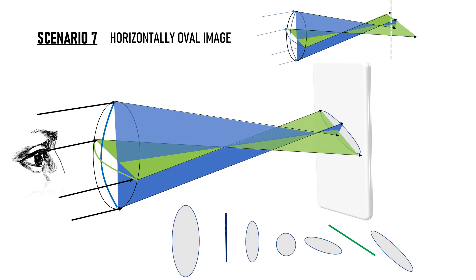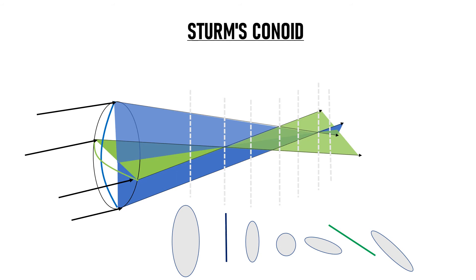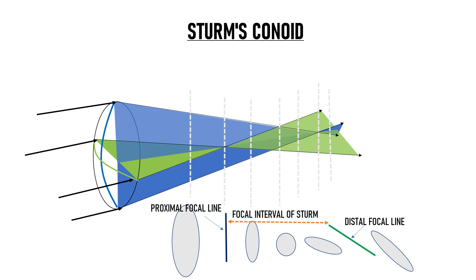This is our Sturm's conoid. We encounter two focal lines: the proximal focal line and the distal focal line. The gap between them is known as the focal interval of Sturm, and within that interval is the circle of least confusion. Light rays from a point object placed at infinity, after refracting through the spherocylindrical lens, never meet to form a point image — at every position we get a line, a circle, or ovals.